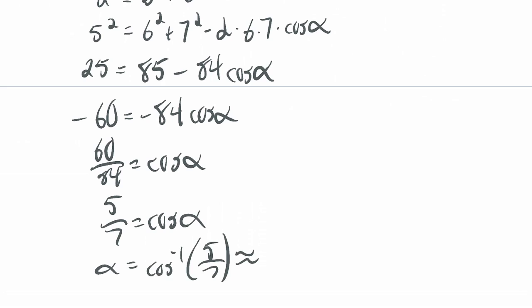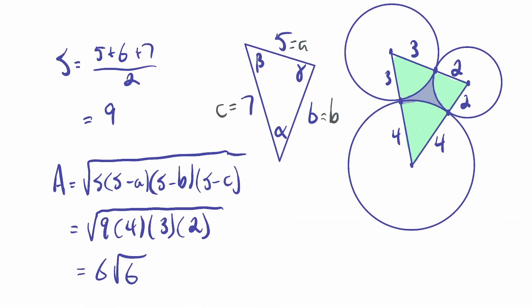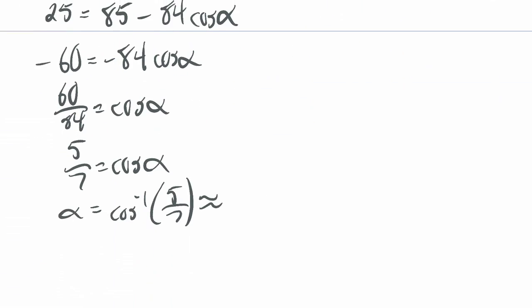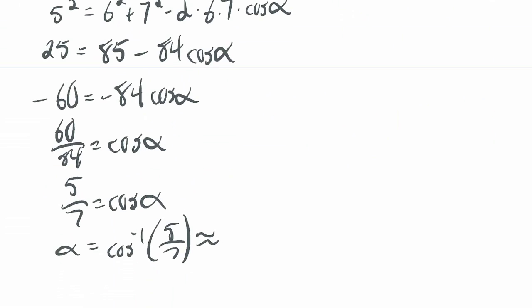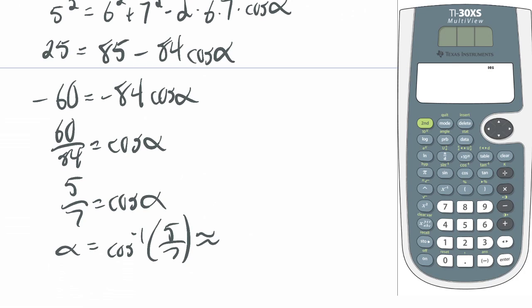So alpha equals cosine inverse of 5 over 7. And if I want, I can throw that into a calculator. Since we're going to use the area of a sector formula, I need to switch to radians. So in my calculator, I have this calculator emulator. I'll put a link in the description for this calculator. There's a free 90-day version. I'm going to make sure I'm in radians mode. And then I want cosine inverse of 5 over 7, and I get 0.7752.